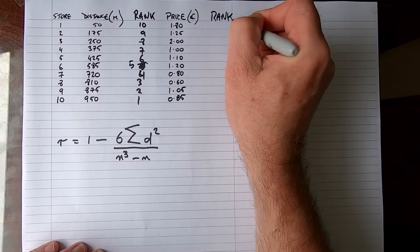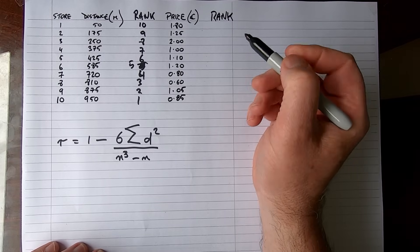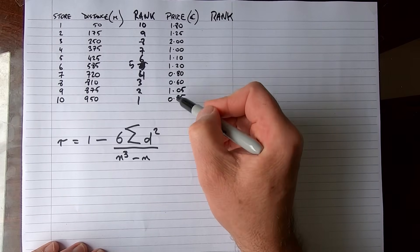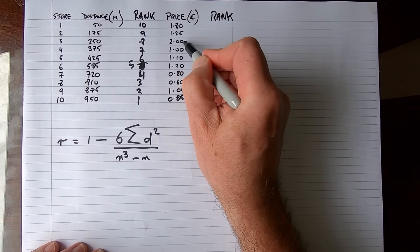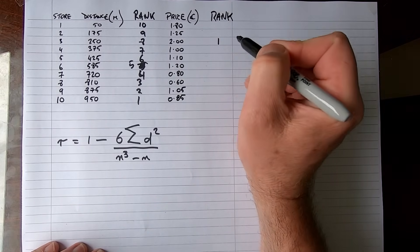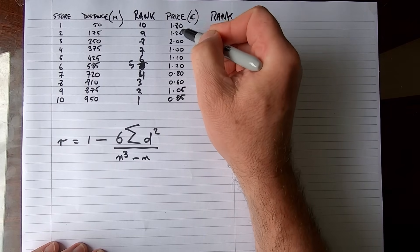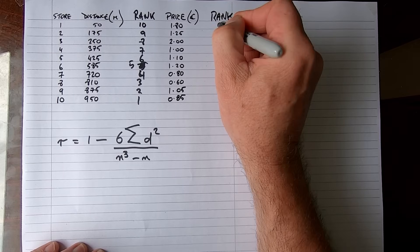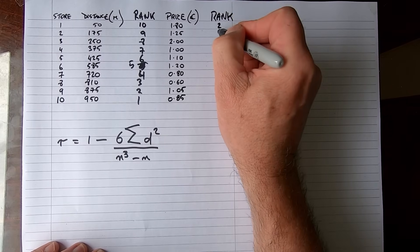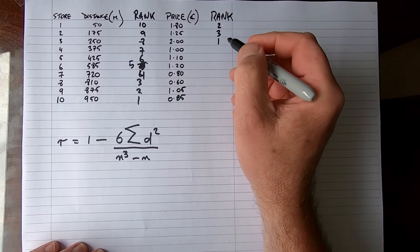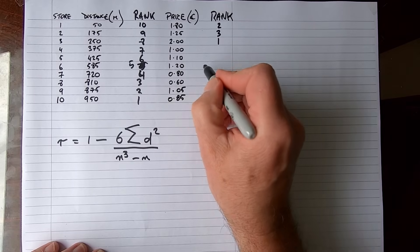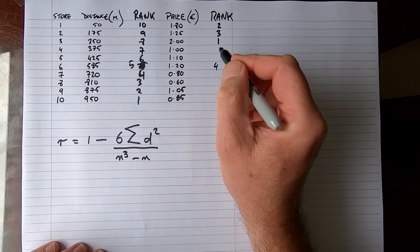Now let's go and rank the price, which is not quite as straightforward. Again, we give the highest value a rank of 1. When we look down through the data, we can see that the most expensive bottle of water is €2.00, so I give that a value of 1. Then we go and look for the second highest value, and scanning through the data I can see it's a price of €1.80 in the first store, so that's a rank of 2. The next value happens to be the rank of 3.